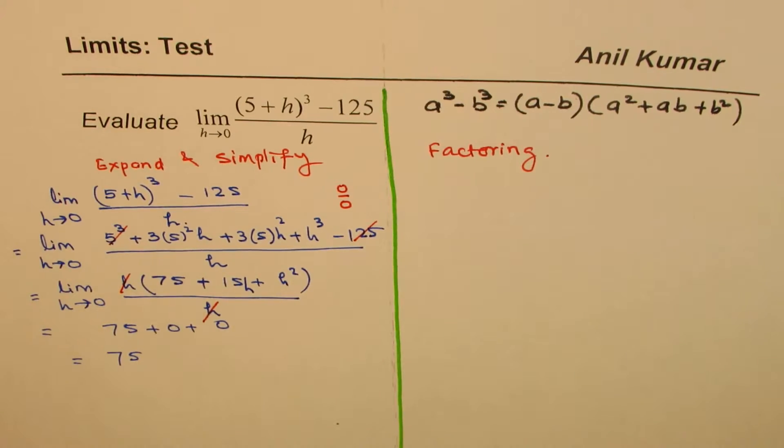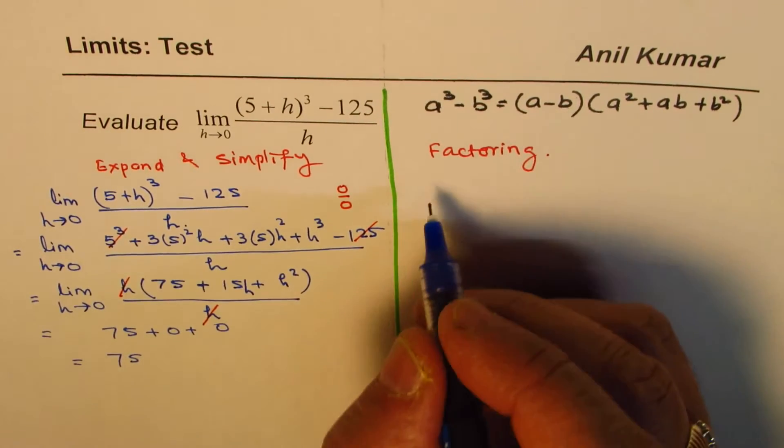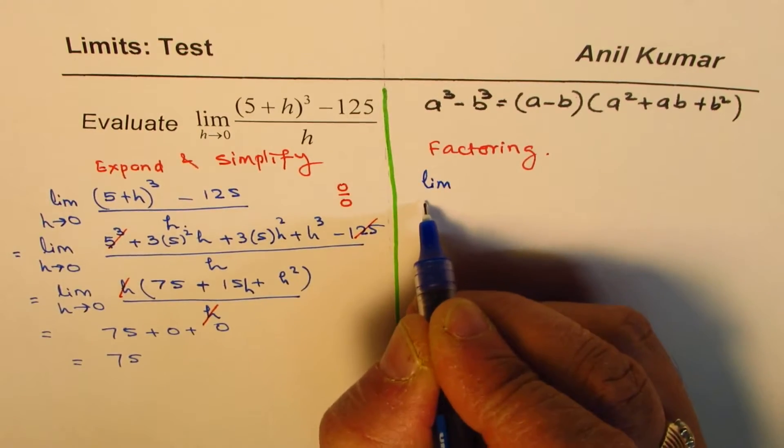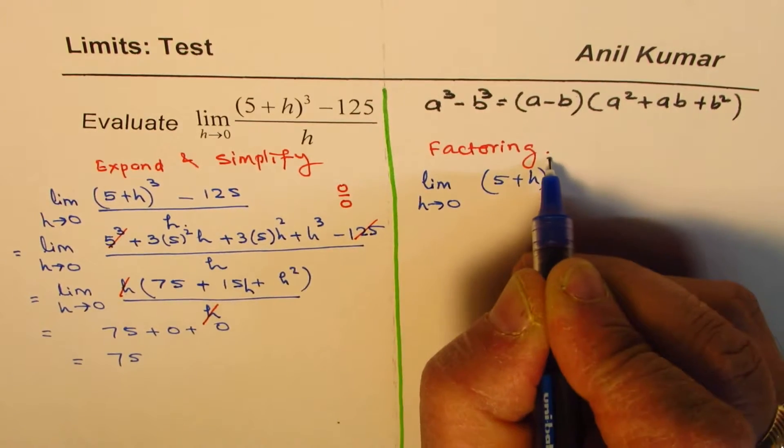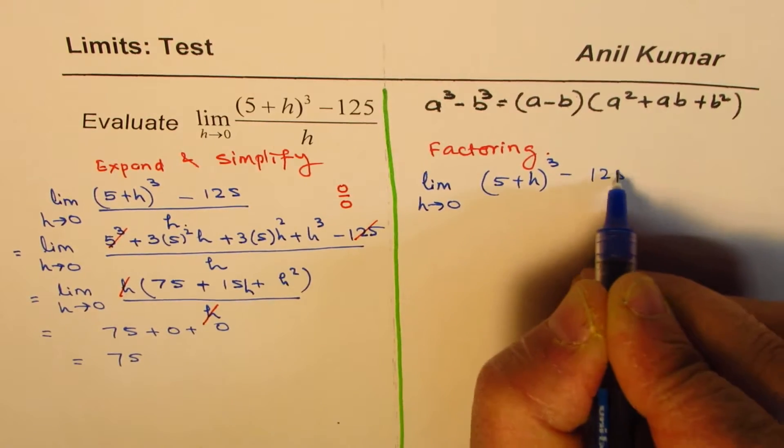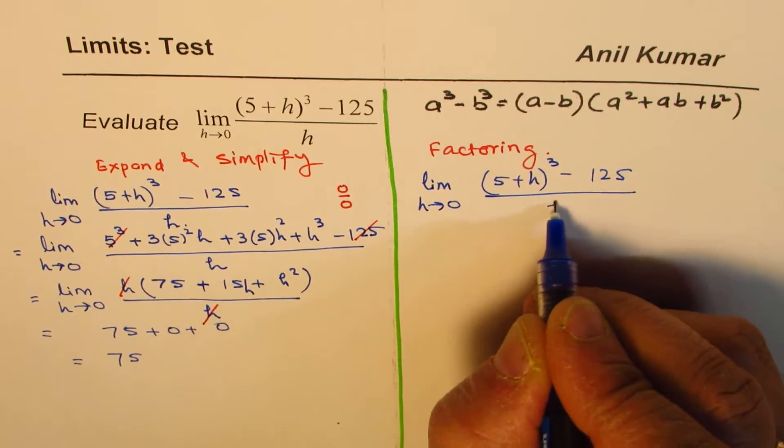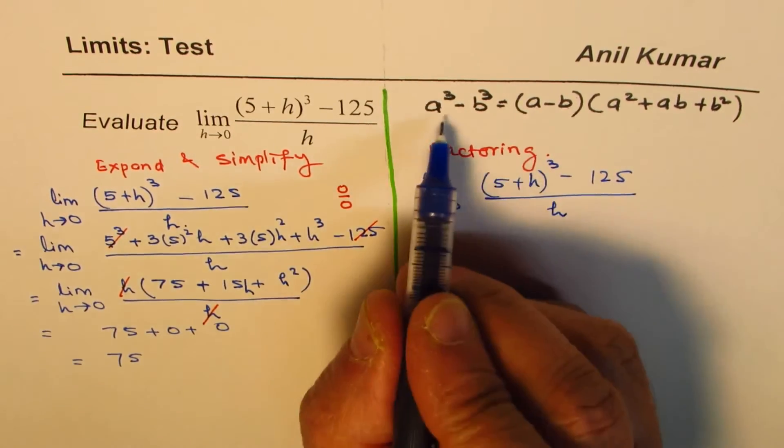Now, we'll use the second method of factoring. So, we'll begin with the same question, which is limit h approaches 0, 5 plus h whole cube minus 125 divided by h.